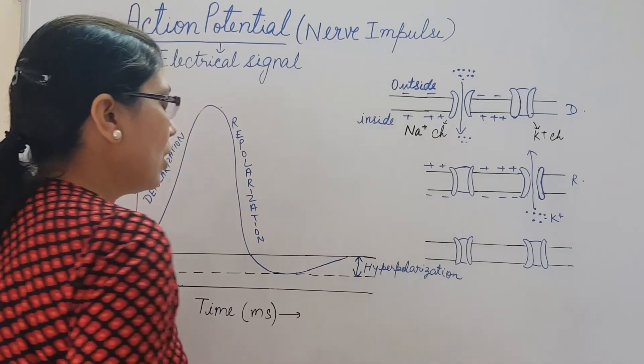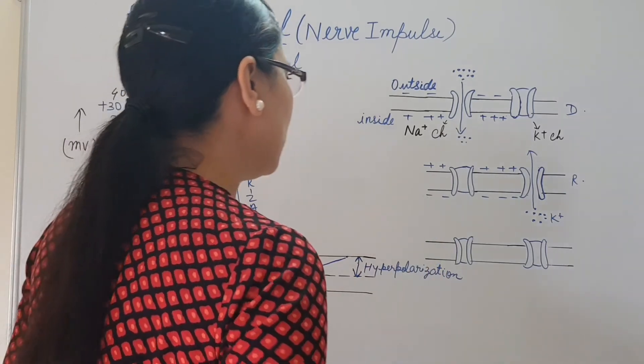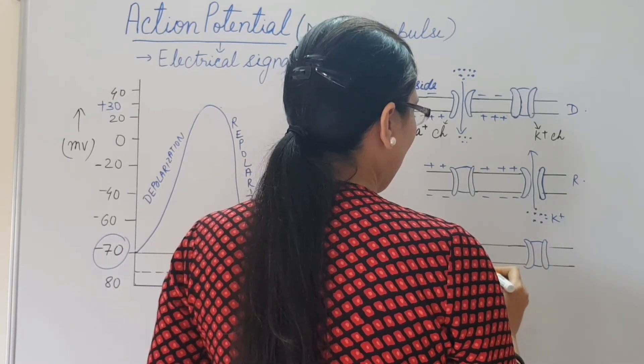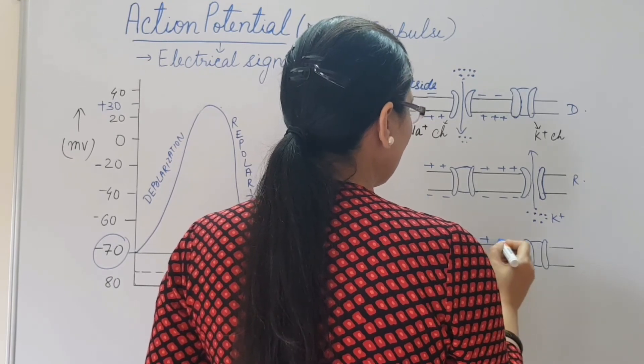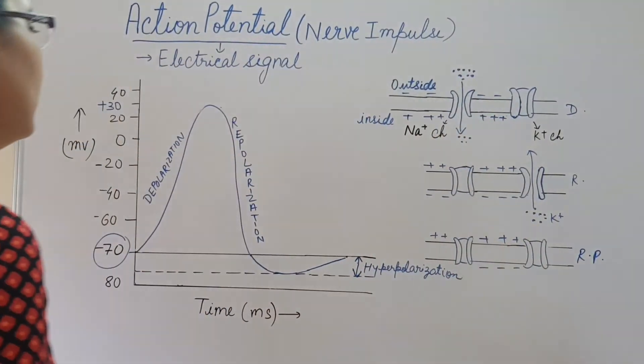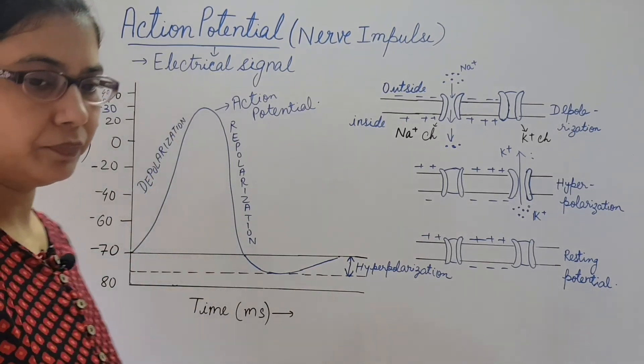When the potassium channel closes, the membrane restores its resting membrane potential and is ready for another action potential. At this point, both the sodium channel and potassium channel are closed, with negative inside and positive outside — this is the resting potential. In this way, the impulse is generated in nerve cells. The action potential or nerve impulse propagates through the surface of the neuron membrane at a speed of 0.5 to 130 meters per second, and one action potential lasts for a few milliseconds.